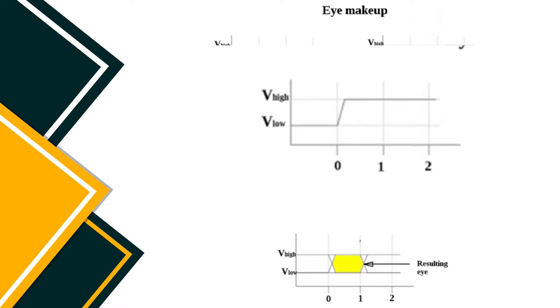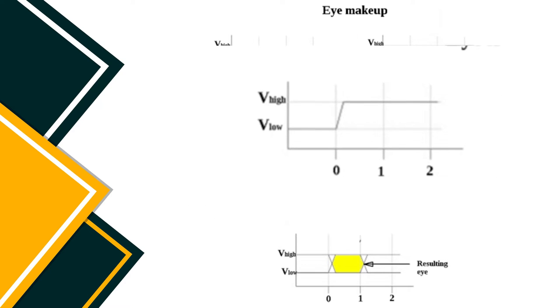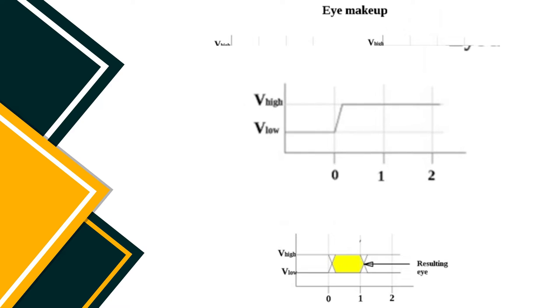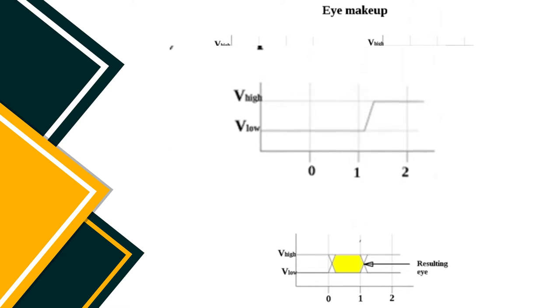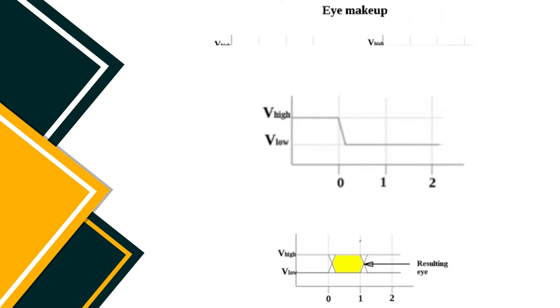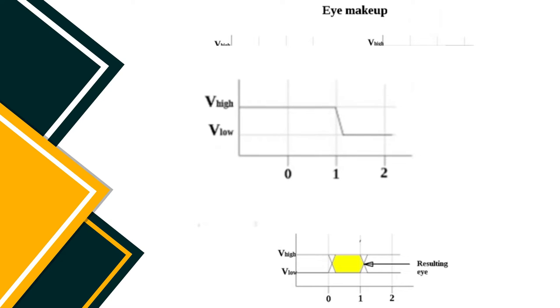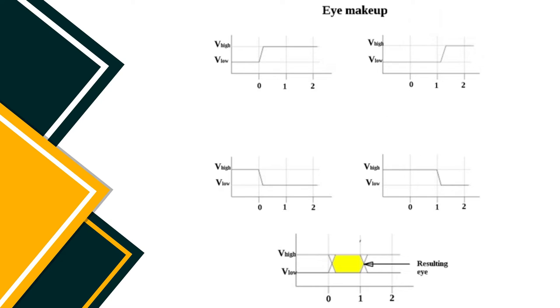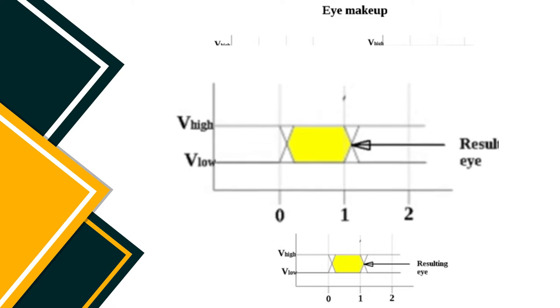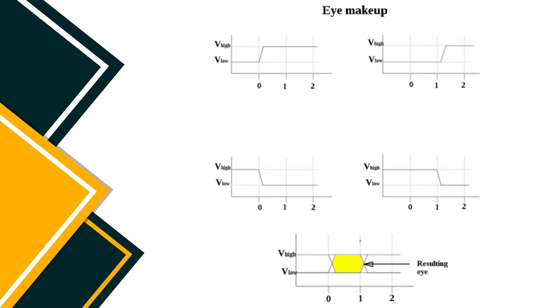As we can see, the rise occurs at point 0 from low voltage to high voltage in figure 1. The same rise occurs at point 1 in the second figure. The fall from high voltage to low voltage occurs at point 0 in the third figure, and the same fall occurs at point 1 in the fourth figure. After superimposing all four waveforms, we can see that the eye pattern is formed, which is highlighted by the yellow shaded area.